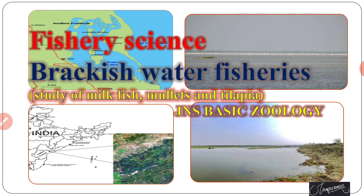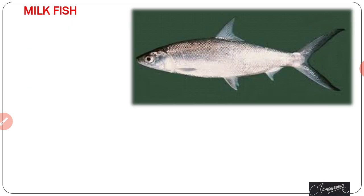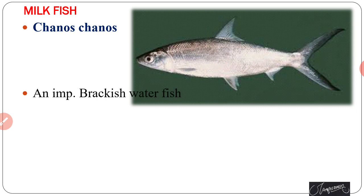The first fish belonging to brackish water is commonly called milk fish, with the scientific name Chanos chanos. This is an important brackish water fish which attains a maximum length of about 150 centimeters.